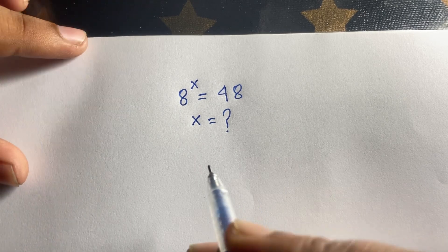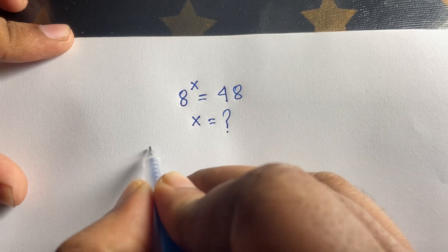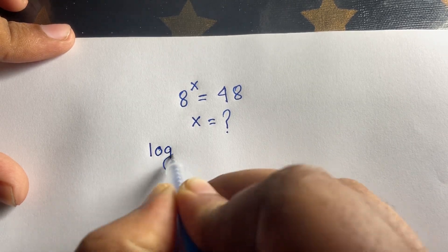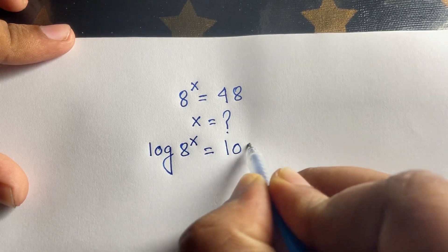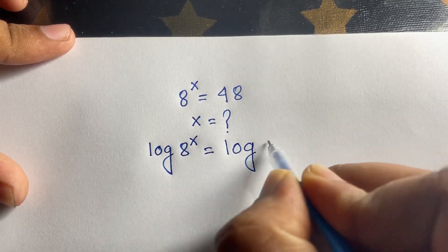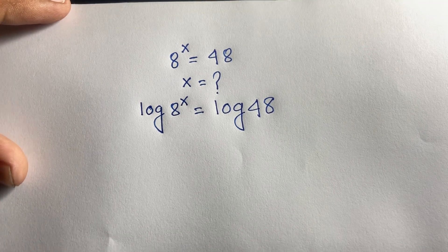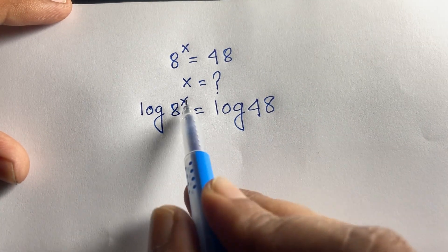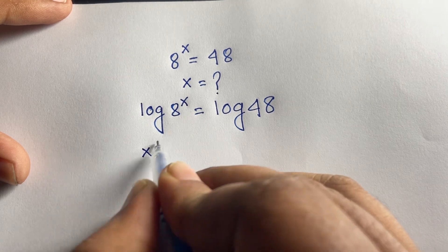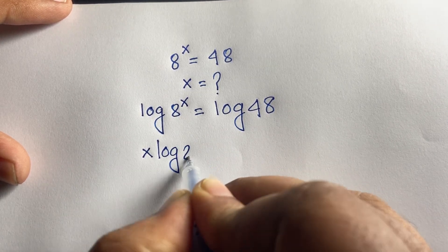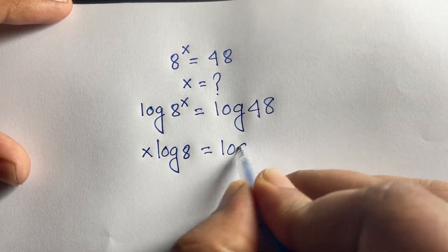If you want to solve this question, first of all, use the natural log on both sides. So I can say log of 8 to the power x is equal to log 48. Now, at this moment, x moves in front according to the exponential rules, so it becomes x times log 8 is equal to log 48.